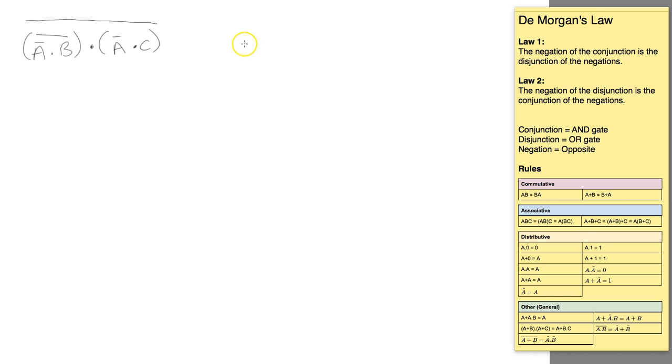Now the method I'm going to show you involves thinking about these as groups, and I did this in the previous example. I want to consider this group here as X and this group here as Y.